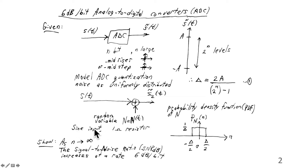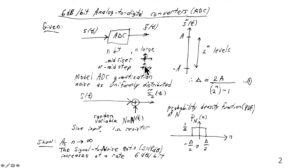Again, a sine wave input between amplitude minus A and plus A. Going into more detail about what happens at the levels — whether it's mid-rise or mid-step, and what goes on at the endpoints — won't really help with the explanation. Because once n gets large, what happens at the ends and whether it's mid-rise or mid-step doesn't matter. It doesn't affect the net result, which will be 6 dB per bit. As n goes to infinity, we want to show that the signal-to-noise ratio in dB increases at a rate of 6 dB per bit.